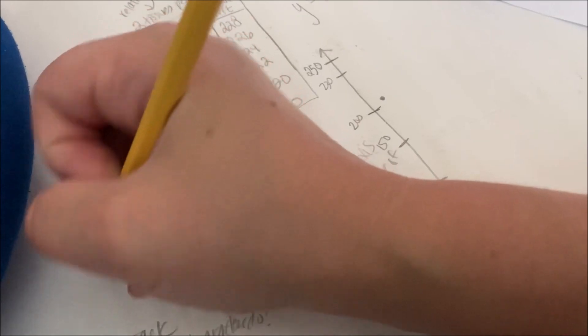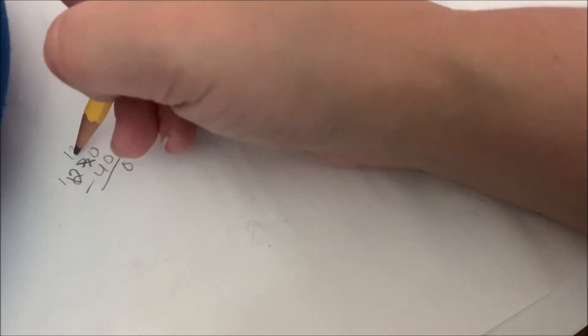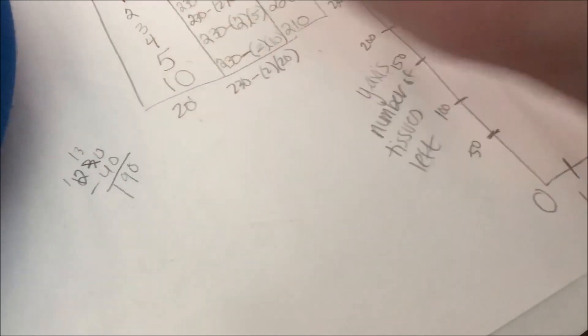230 minus 40. 0 minus 0. Let me borrow from here. Now this becomes 13. 13 minus 4 is 9. 190.